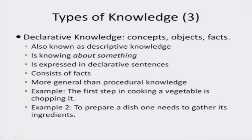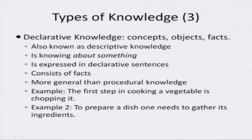Declarative knowledge includes concepts, objects and facts. It is also known as descriptive knowledge — it is knowing about something. It is expressed in declarative sentences and is a collection of facts. It is more general than procedural knowledge. For example, 'the first step in cooking a vegetable is chopping it' is general enough to apply to cooking any vegetable. Similarly, 'to prepare a dish one needs to gather its ingredients' is general enough to prepare any dish. Therefore declarative knowledge is more general than procedural knowledge.